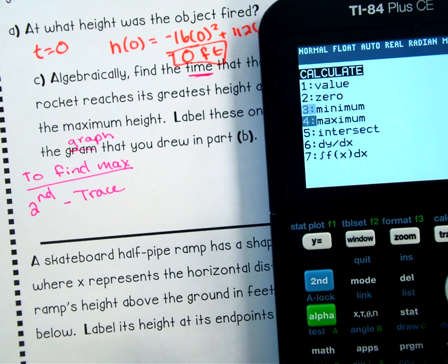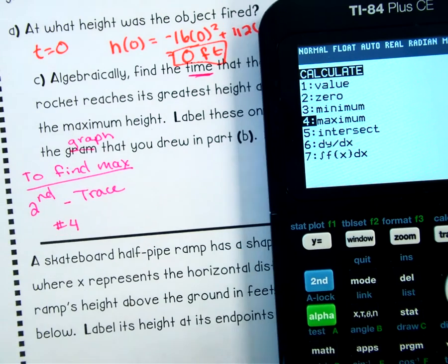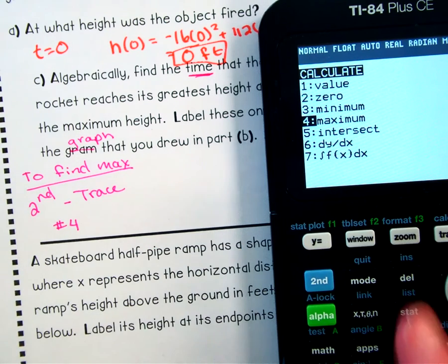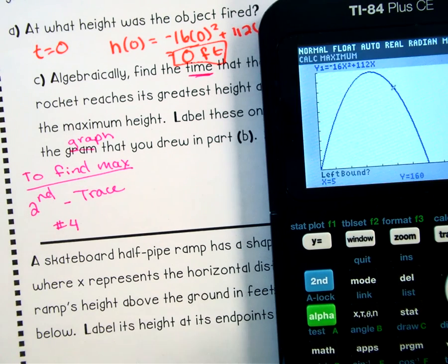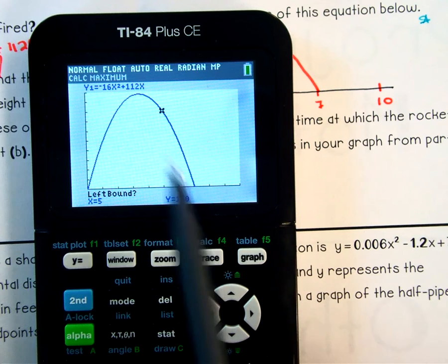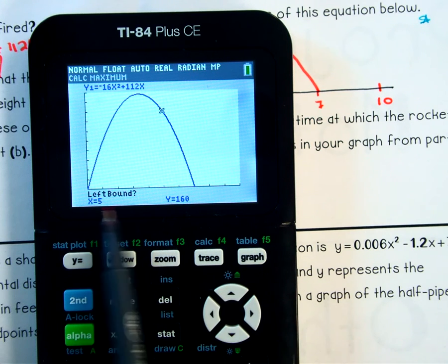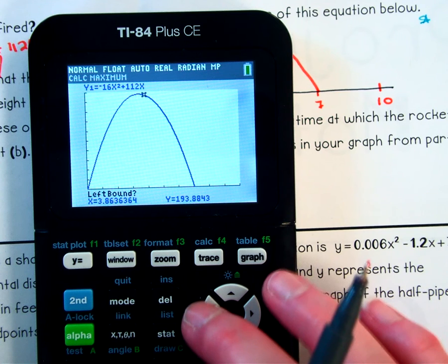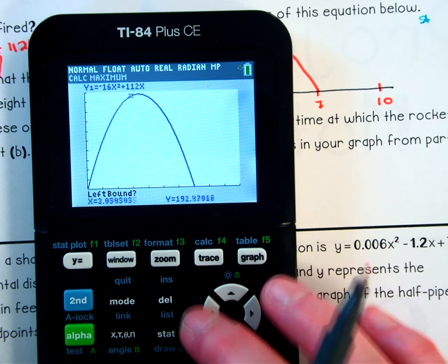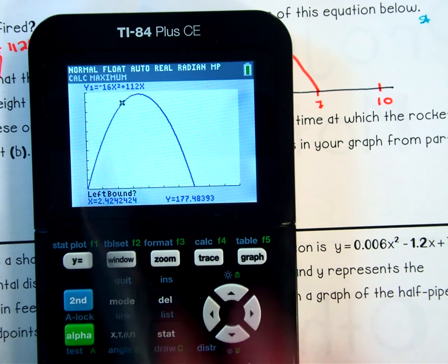Second, trace. And right down here, as you can see, maximum is choice number four. Okay. So again, in the calculator, we can find that maximum. Second trace, choice four. So I'm going to select that. And then we have this little blinky guy here. And right down here, it's asking us left bound. So what it wants us to do is it wants us to go to the left side of our maximum. So I'm going to arrow over to the left. And now my blinky guy is on the left side of it. So I'm going to hit enter.